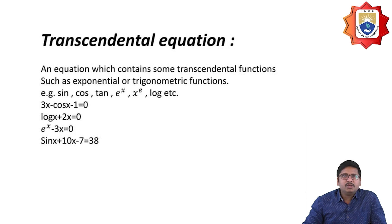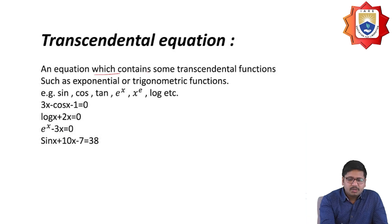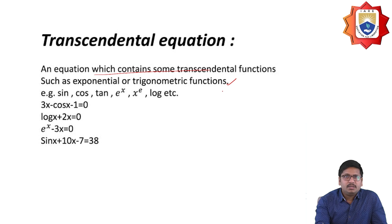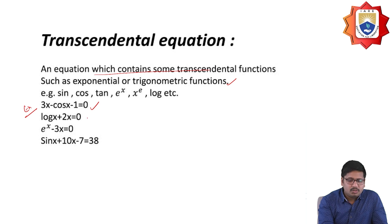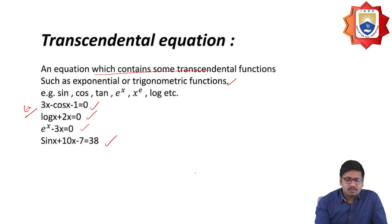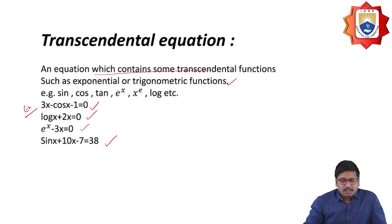Transcendental equations are equations containing transcendental functions such as exponential and trigonometric functions — for example, sin, cos, tan, e to the power x, x to the power e, log, etc. Some examples are: 3x minus cos x minus 1 equal to 0, log x plus 2x equal to 0, and sin x plus 10x minus 1 equal to 0.